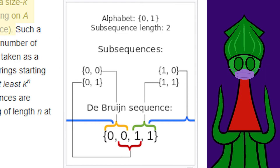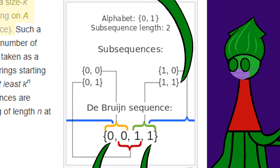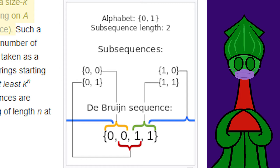A Debron sequence of order two on a two-sized alphabet is a little cooler. Zero, zero, one, one has a pair of zeros, a zero one, a pair of ones, and then, looping back around to the beginning of the sequence, one zero. Every two-length permutation of ones and zeros is in here precisely once.